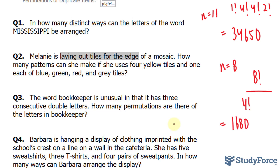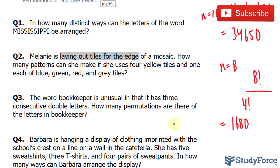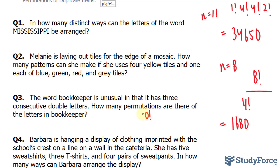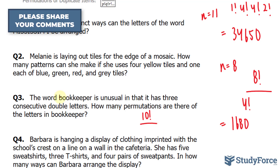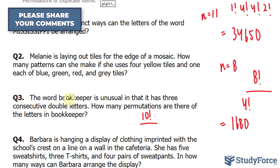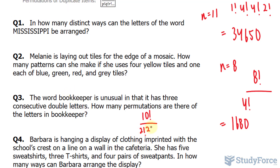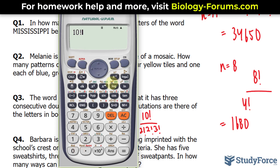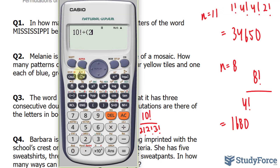The next question is similar to what we did in question 1. The question reads: the word bookkeeper is unusual in that it has 3 consecutive double letters. How many permutations are there of the letters in bookkeeper? Let's count how many letters: 1, 2, 3, 4, 5, 6, 7, 8, 9, 10 — so 10 factorial. Starting with b, there's only one. There are two o's, two k's, three e's, one p and one r. Using our calculator: 10 factorial divided by 2 factorial times 2 factorial times 3 factorial.